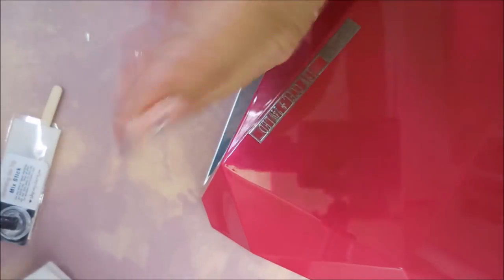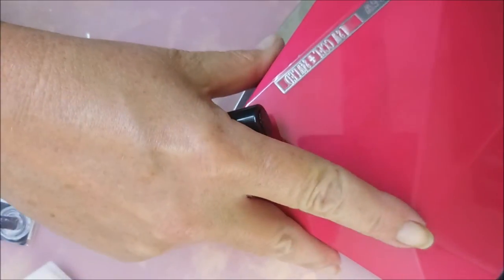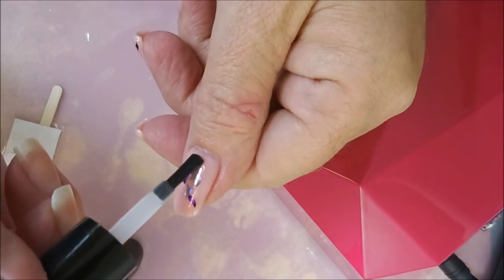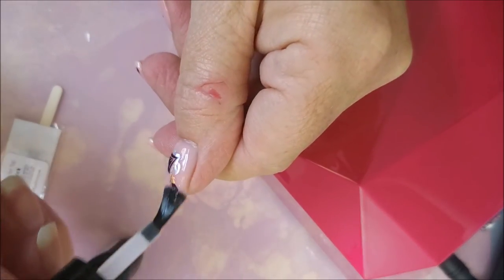My lamp doesn't have a name on it or I'd tell you what the name of it is, even the box doesn't. Oh and there we go, all done. This is a no wipe gel top coat with all the glitters in it. I didn't have to wipe it off with alcohol or anything.